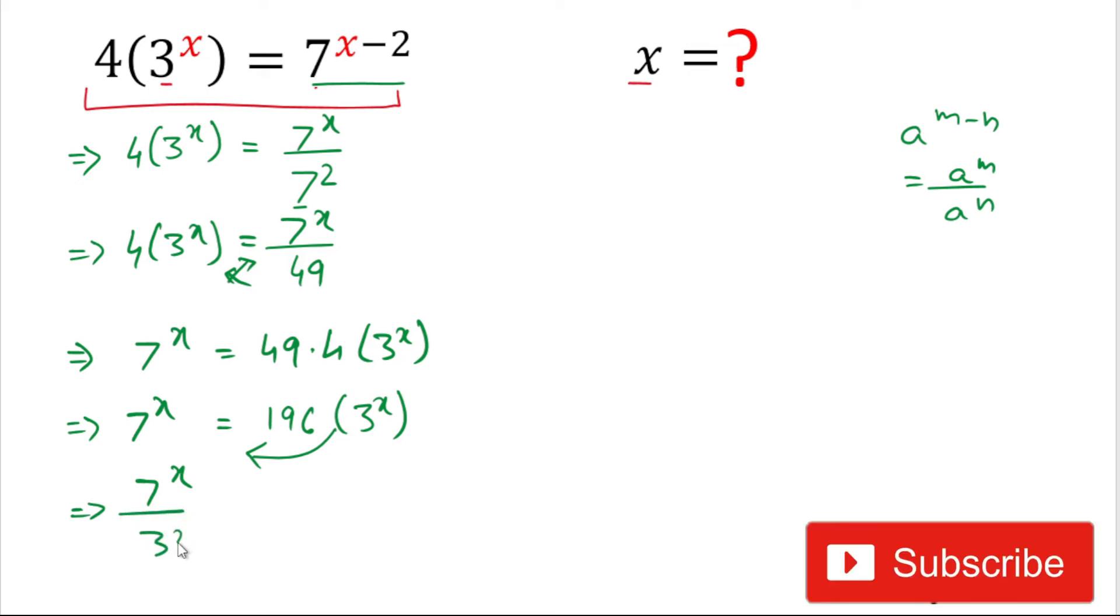It will become 7 to the power x divided by 3 to the power x equals 196. Here again we'll use the rule of indices. It is a to the power m divided by b to the power m, we can write it as a divided by b, whole to the power m.